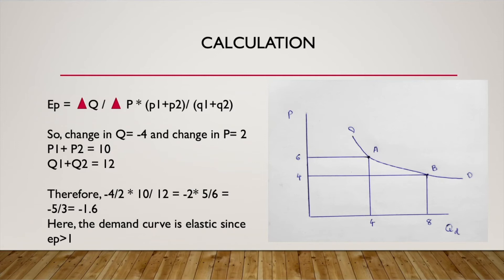Applying this to calculate arc elasticity between points A and B: ΔQ (change in Q) is 4 minus 8, that is minus 4. ΔP (change in P) is 6 minus 4, that is 2. For P1 plus P2, we add the two prices: 6 plus 4 equals 10. For Q1 plus Q2, we add the two quantities: 4 plus 8 equals 12. Applying the formula: (−4 / 2) × (10 / 12).